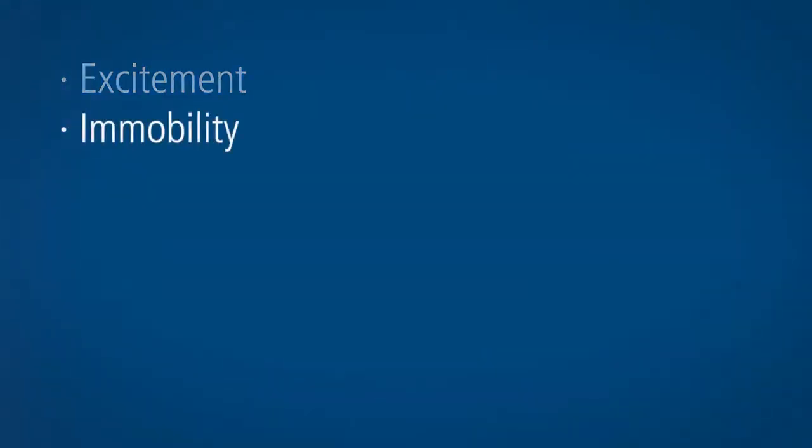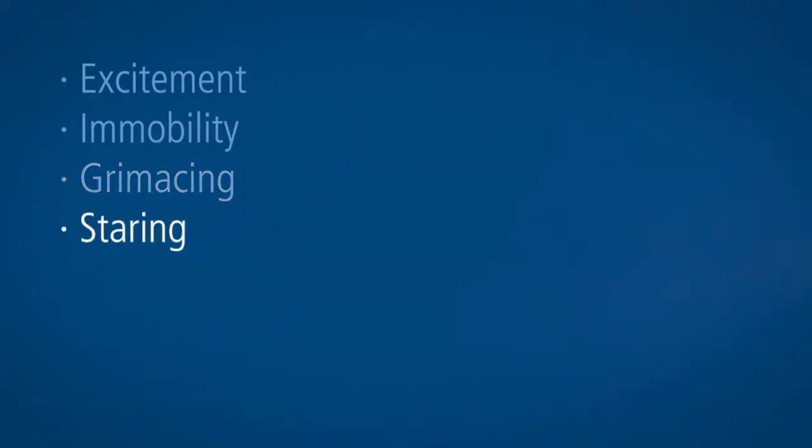The first step in assessing patients for catatonia is observation. Here, I'm evaluating overall motor activity. Is he excited and moving around more than normal, or is he immobile and moving around less than normal? Then, starting with the face, I'm looking for grimacing. Then, looking at his eyes for staring behaviors, or for minimal eye contact with me, which can be a sign of withdrawal.